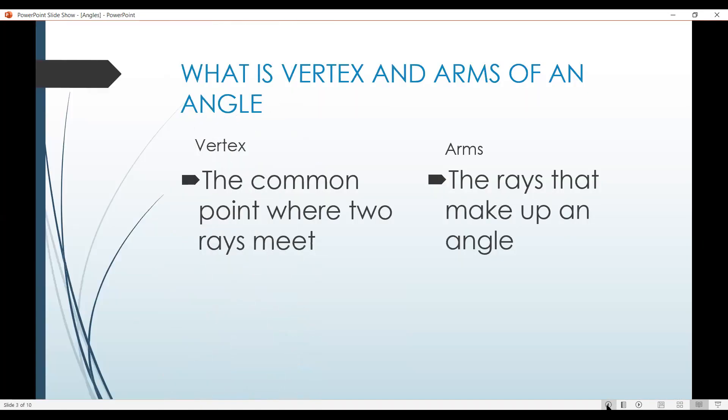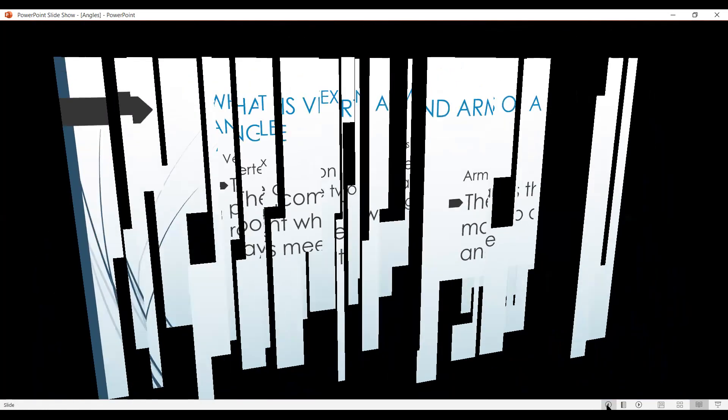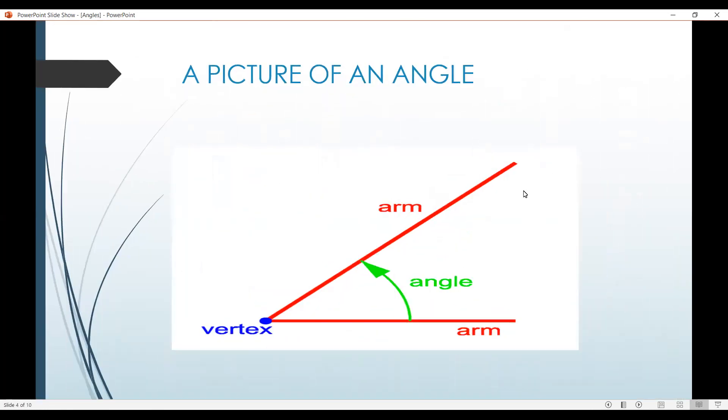What is vertex and arms of an angle? Vertex: The common point where two legs meet is called the vertex. Arms: These that make up an angle are called arms. This is a picture of an angle. Like this, these ones are the arms. The blue point is the vertex. This all makes an angle.